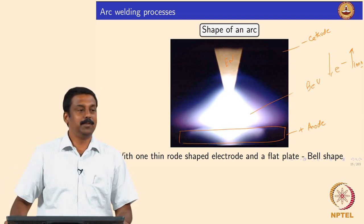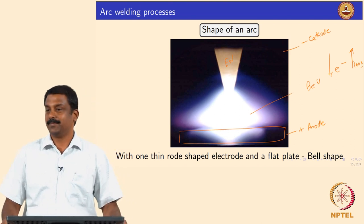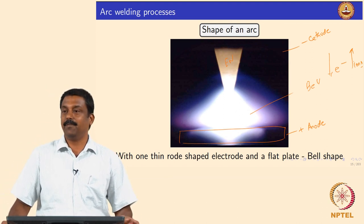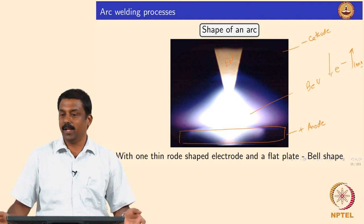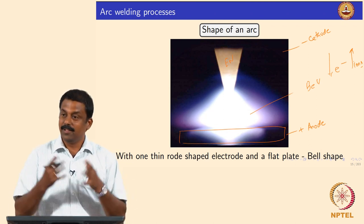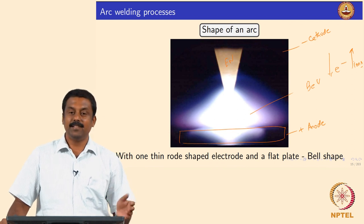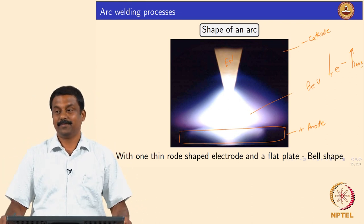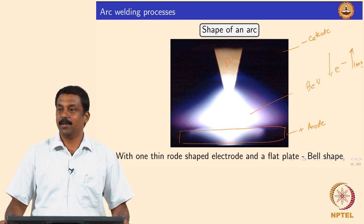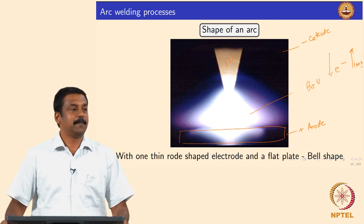Using electrode positive (EP) is beneficial for a consumable welding process. If you have a filler wire that must be molten, it is advisable to make your consumable wire positive so electrons can reach it, transferring more heat and melting it more. In some cases you also need to send more ions; since ions are heavy, when they bombard a surface they clean it — this is the principle of ion milling, where ions are generated and directed to erode a surface.